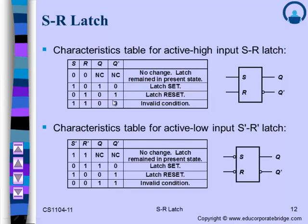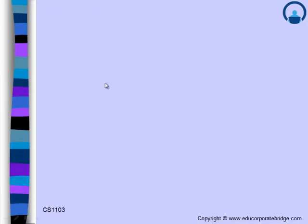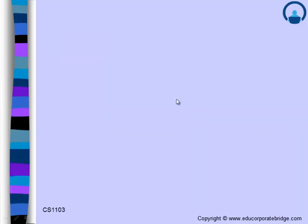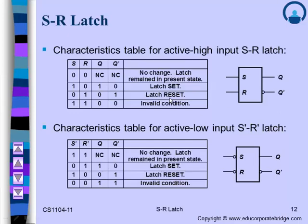When S=0 and R=1, we get output Q=0 and Q-bar=1. Therefore, we call this the reset state. For the SR NOR latch, when both inputs are 1, the outputs are both 0 — that is, Q and its complement Q-bar are the same. But logically, Q and Q-bar cannot be the same. So in the SR NOR latch, the condition S=1, R=1 is considered an invalid state.